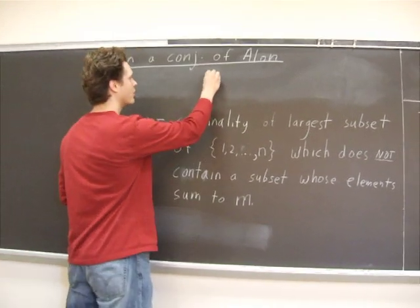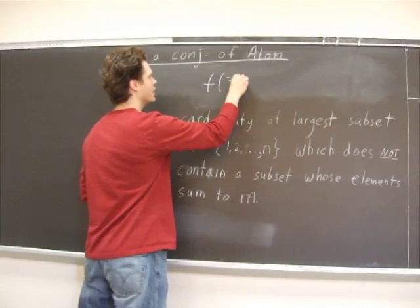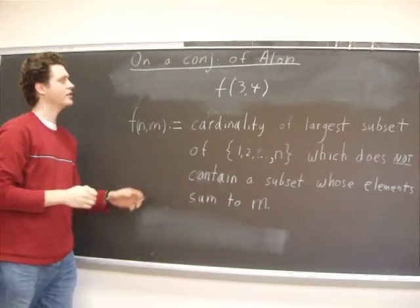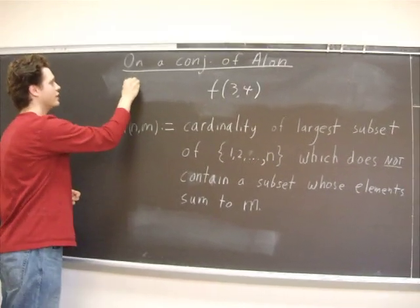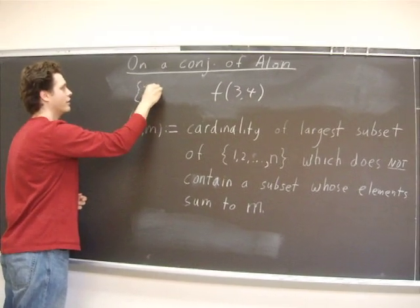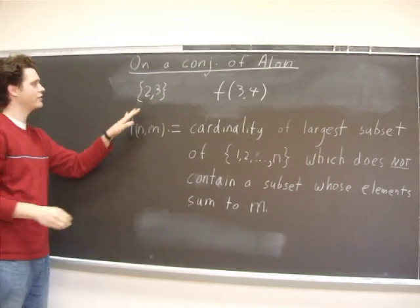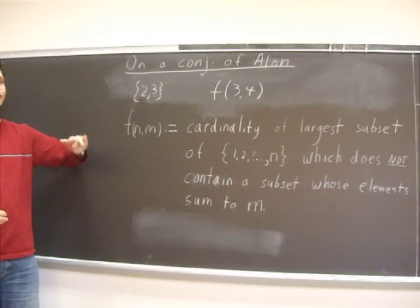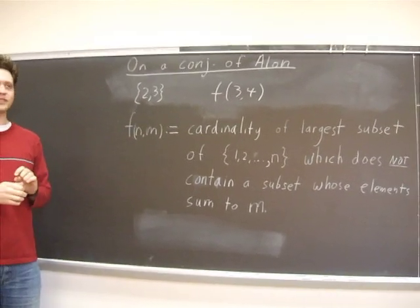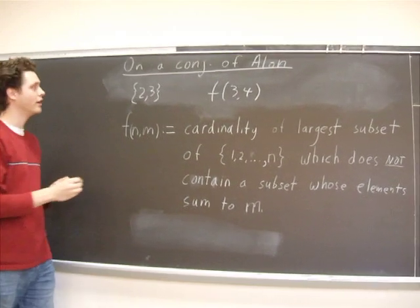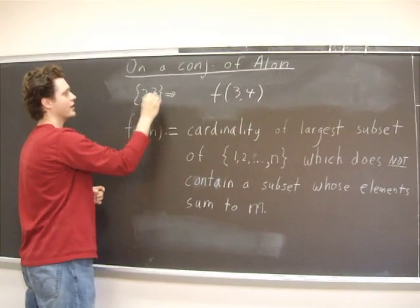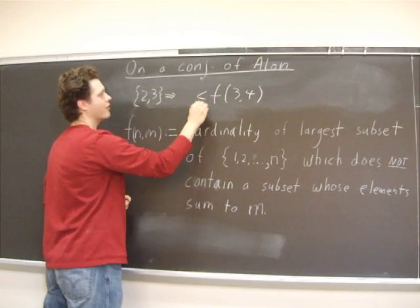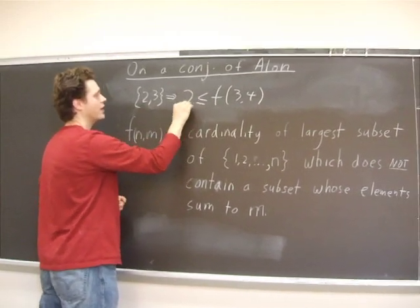For example, we could try and compute f(3,4). One subset of the first three integers is, for example, 2, 3. And if you look at this, there's no subset—2 plus 3 is 5, and each of the singleton subsets don't sum to 4. So no subset of this set sums to 4, which implies that f(3,4) is at least 2.